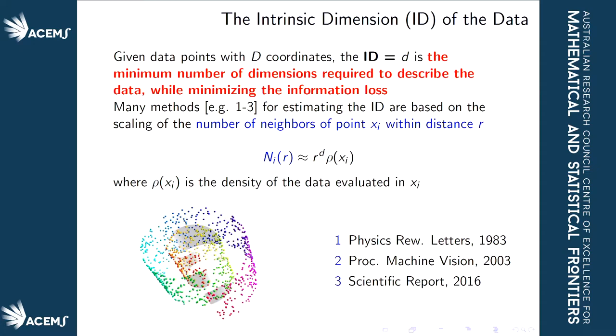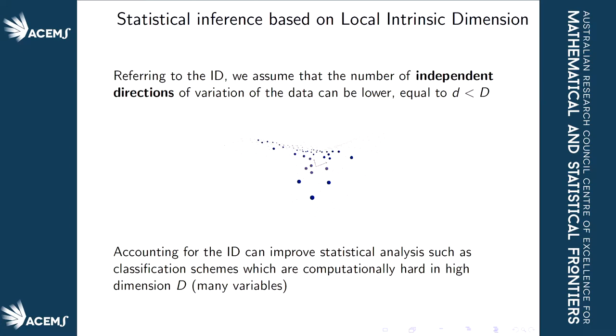Why is this intrinsic dimension useful? Essentially, the intrinsic dimension is the number of independent directions of variation of the data, and often this is lower than the original dimension. Suppose you have data in a 3D space — capital D is 3 — but the data is really lined up on a surface of dimension 2, so lowercase d is 2.